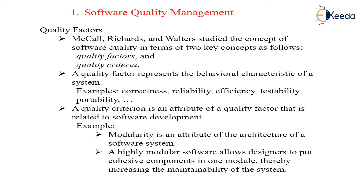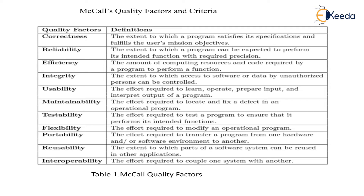Now let us study the factors and criteria in detail. Looking at Table 1, all quality factors related to the product are listed: correctness, reliability, efficiency, integrity, usability, flexibility, portability, reusability, and interoperability. Note that we are going to study three quality management frameworks: McCall's, then ISO 9126, and then ISO 9000-2000. What we are seeing right now are the quality factors and definitions of McCall's model.